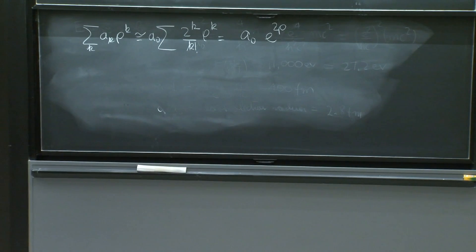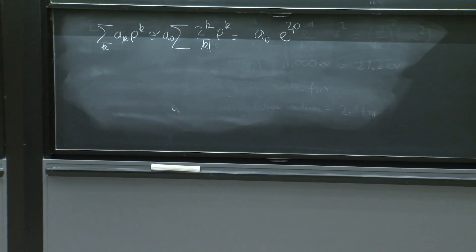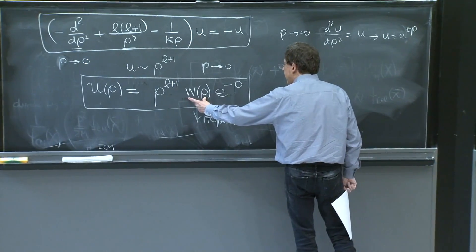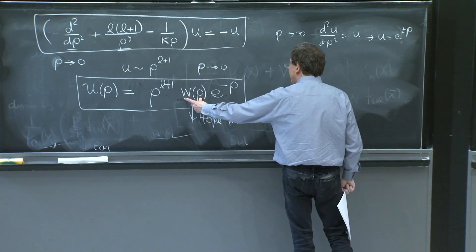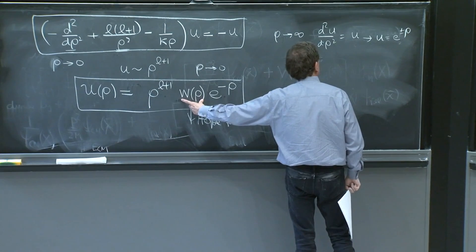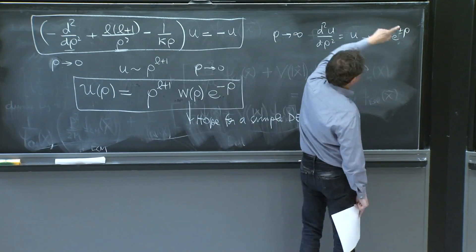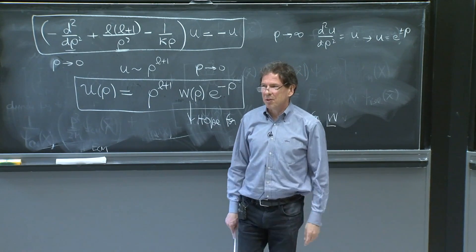It's kind of fair to do that. It's saying that if the w solution doesn't truncate, it's going to go like e to the 2 rho, which precisely, with an e to the minus rho, is going to give you the other possible behavior of the solutions.